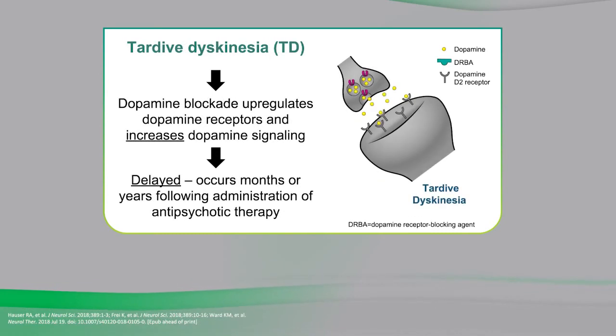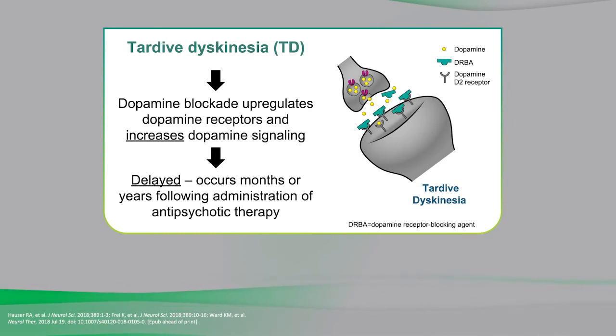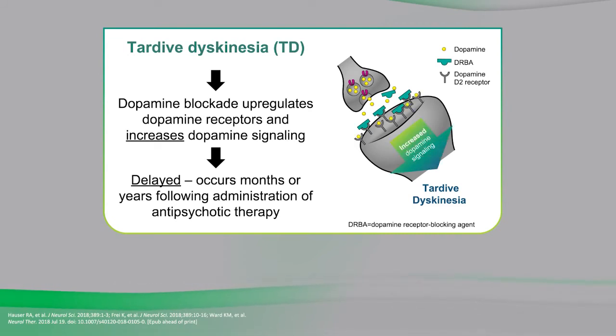By contrast, the mechanism thought to be behind TD is a bit less intuitive. In this case, the dopamine receptor blocking agent is thought to result in upregulation of dopamine receptors, leading to increased dopamine signaling. Since this mechanism requires that the body adapt to the medication and upregulate dopamine receptors, it makes sense that onset may be delayed. In the elderly, TD can develop in less than a few months, but in general it occurs following months or years of antipsychotic administration.